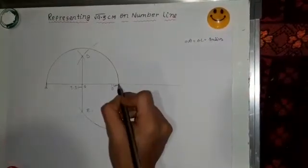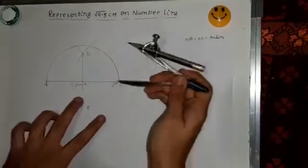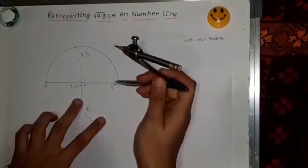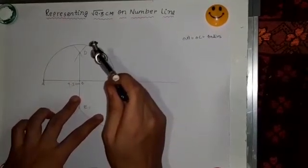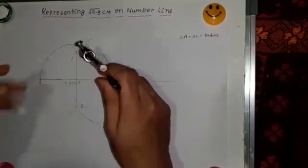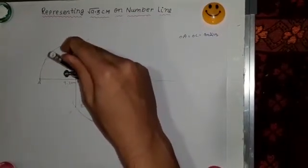So it will come at the point C over here you can see. After that now take B as a center and BC as a radius or any radius you can take and draw another small semicircle on the line.